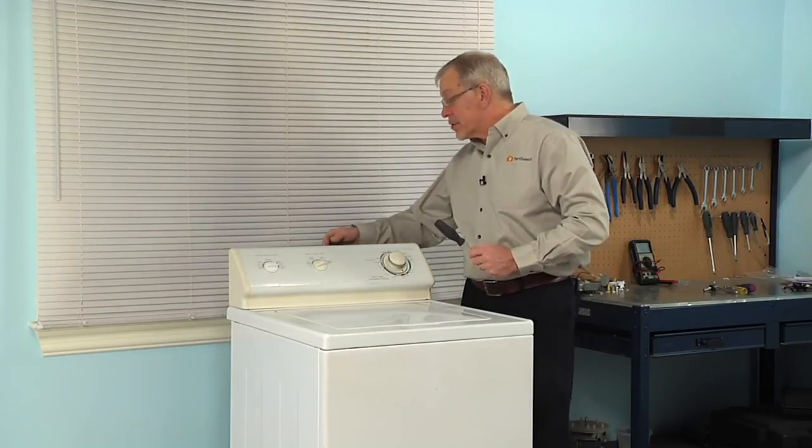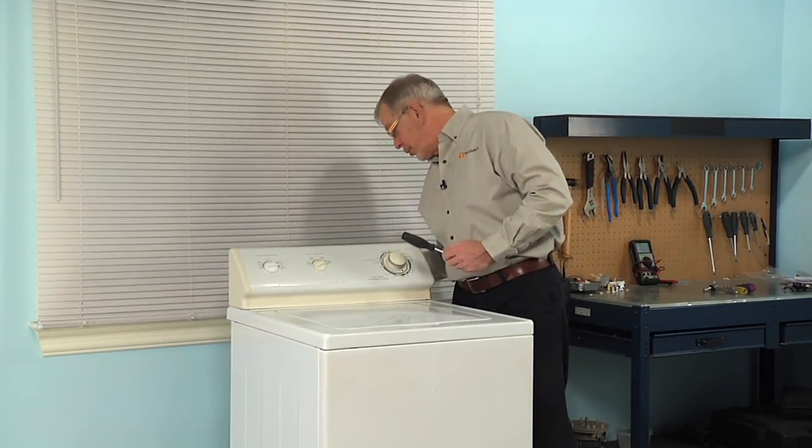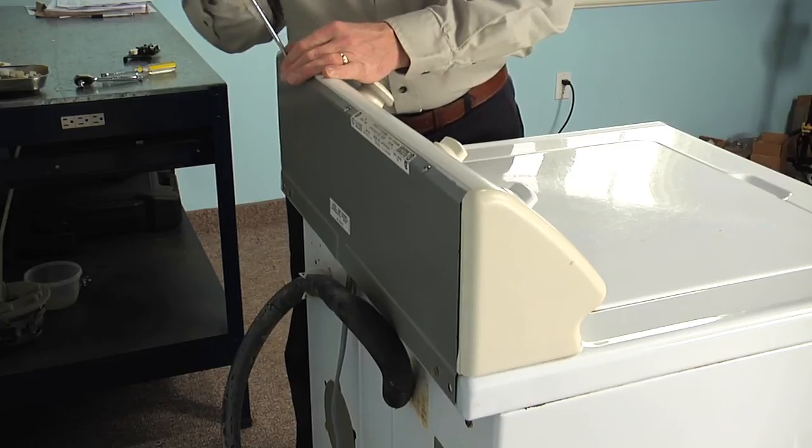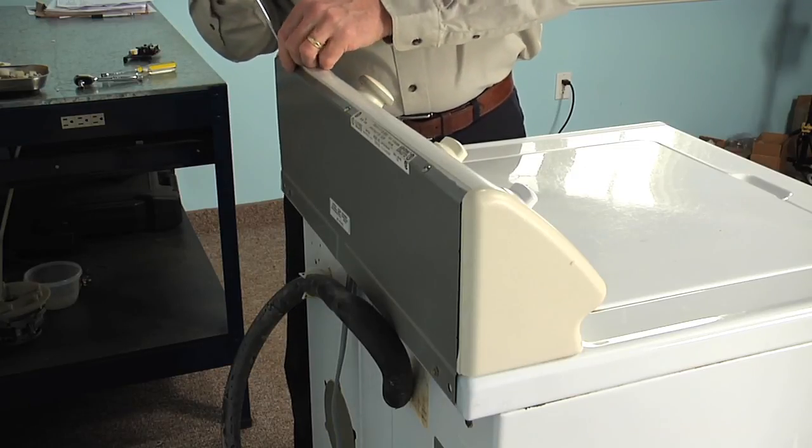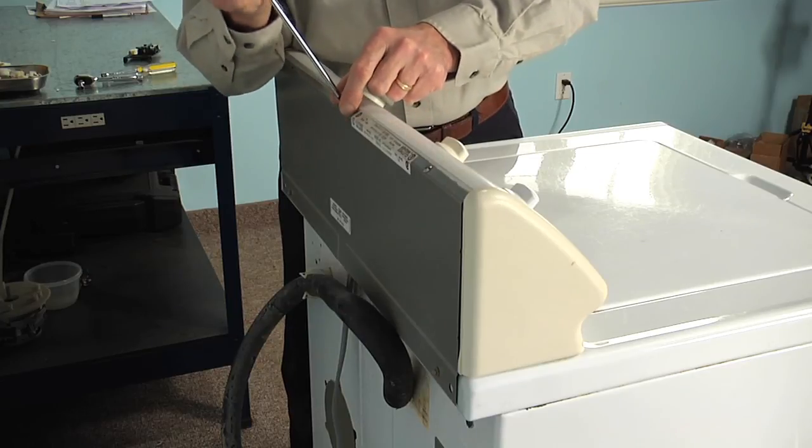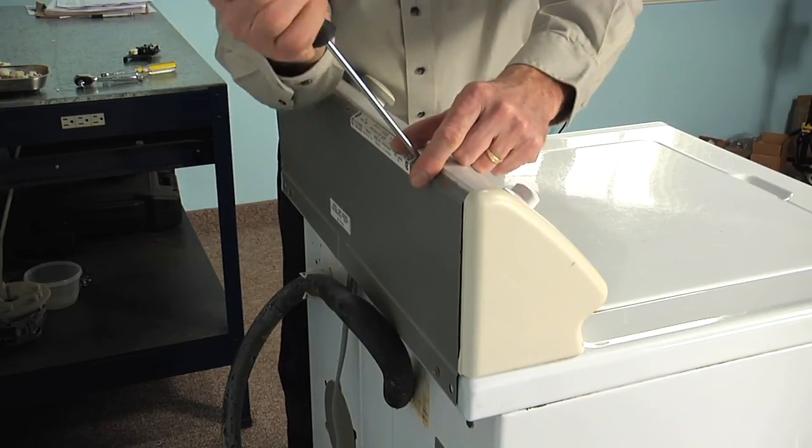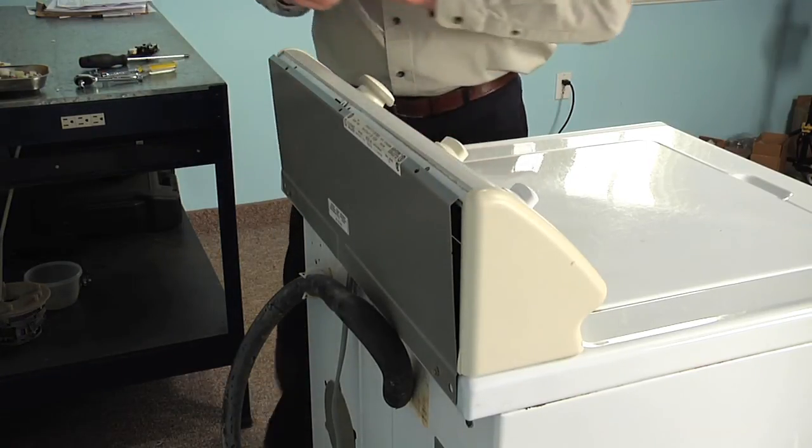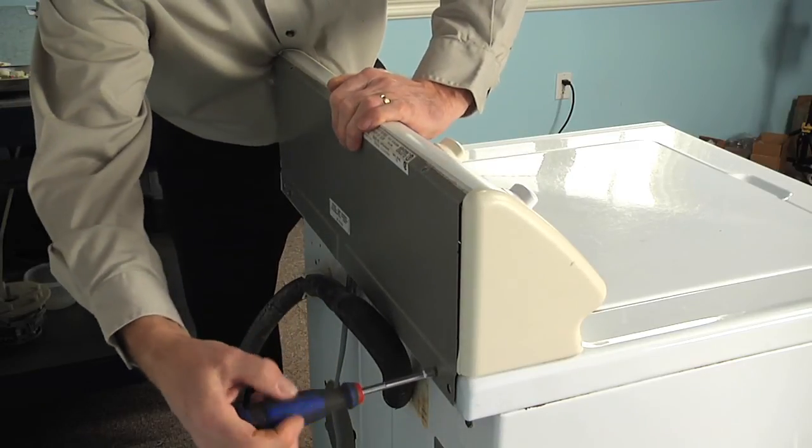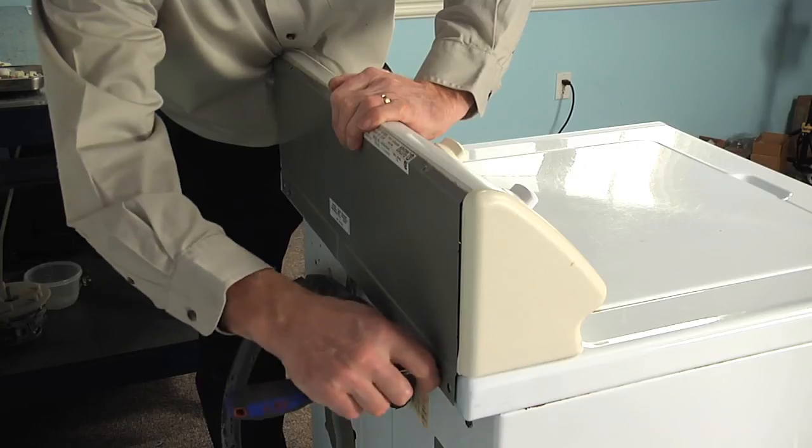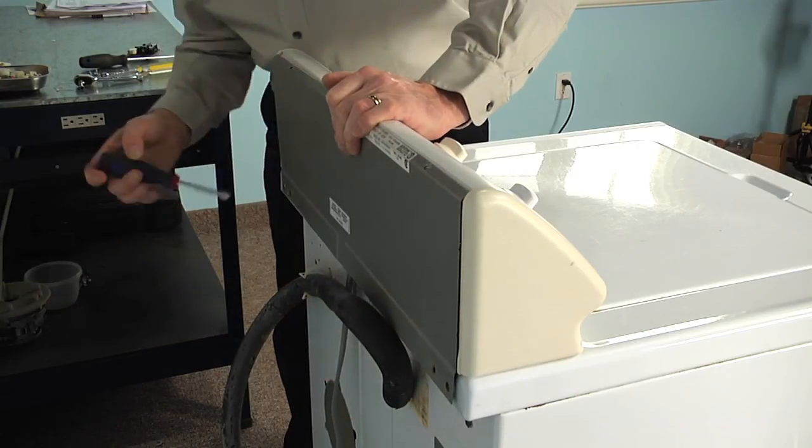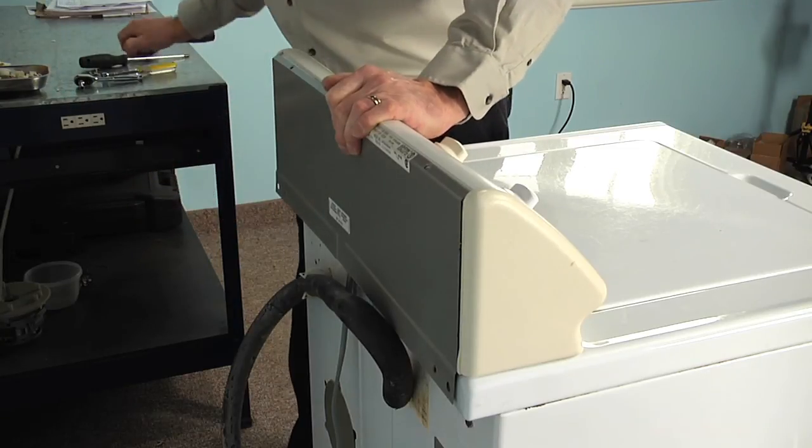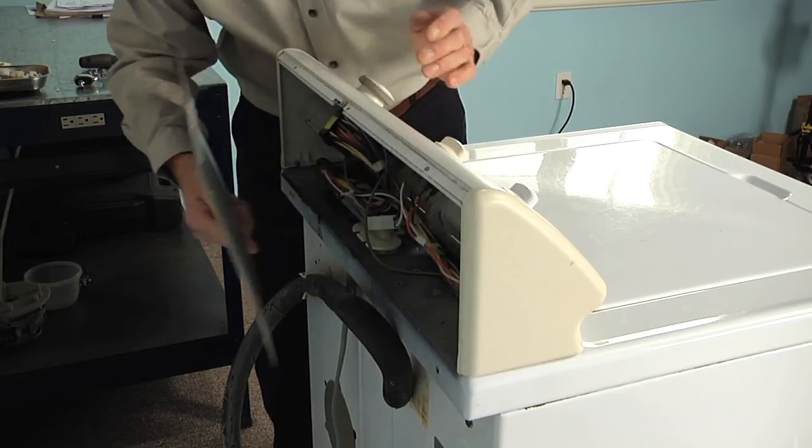We'll start by removing the three Phillips screws across the top of that back panel, and the two-quarter-inch hex head screws along the bottom of it, and lift the panel away. Set it aside.